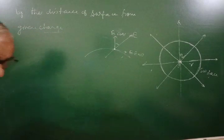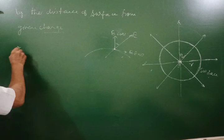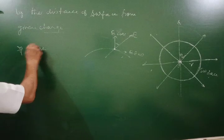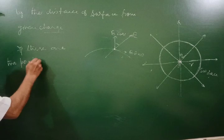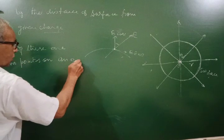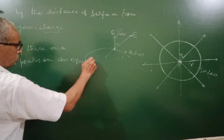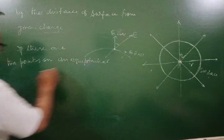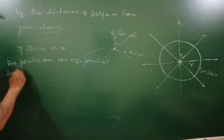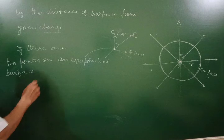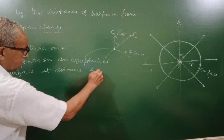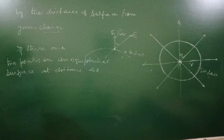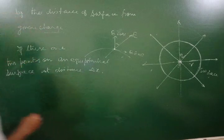We can also prove this mathematically. Suppose there are two points A and B on an equipotential surface, separated by a distance delta x. There are two points on an equipotential surface at distance delta x apart.